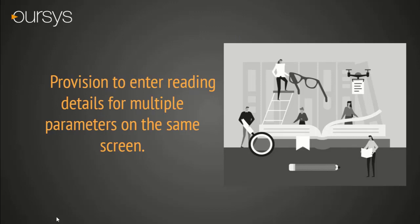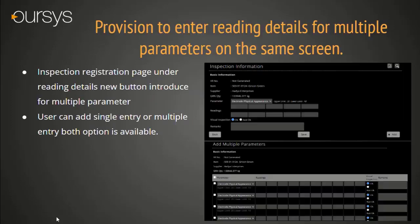Provisions to enter reading details for multiple parameters on the same screen. This feature has been introduced to reduce data entry time in the quality module. Here, the user can enter multiple reading details in a single click. Once you click on the Add button, the multiple reading details capturing screen will open. We have kept single entry also, so it remains user-friendly.